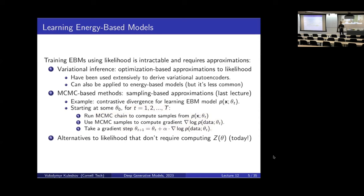What if, as in GANs, we try to not optimize the log likelihood, but instead choose a different objective? And maybe that would make things easier. The idea I want to explore today is: instead of relying on these two classical sets of techniques for approximating log likelihood, can we instead use something other than the log likelihood, which will not require us to deal with the partition function? And therefore, will be a better way of learning an energy-based model.